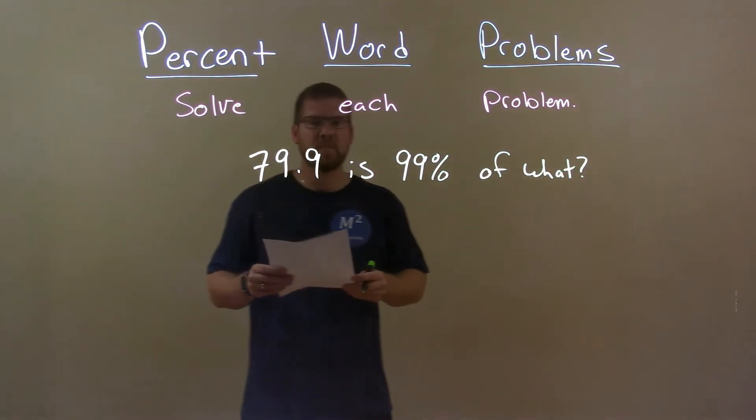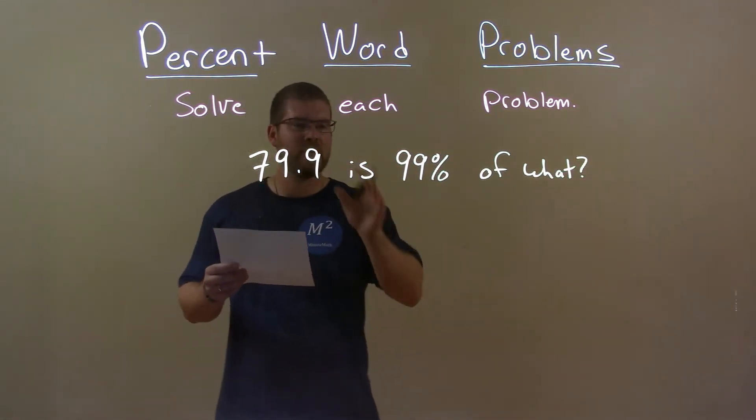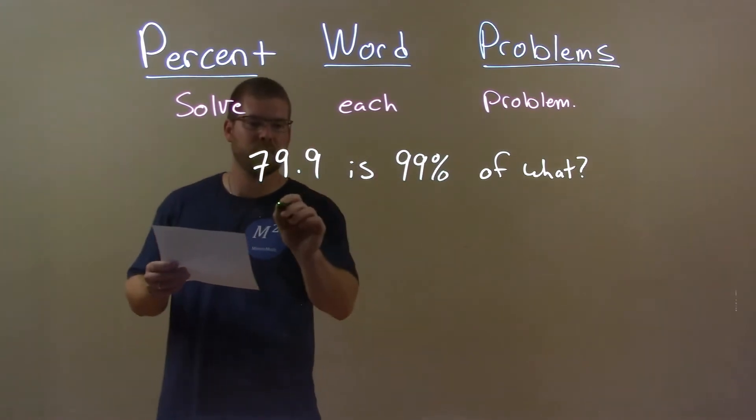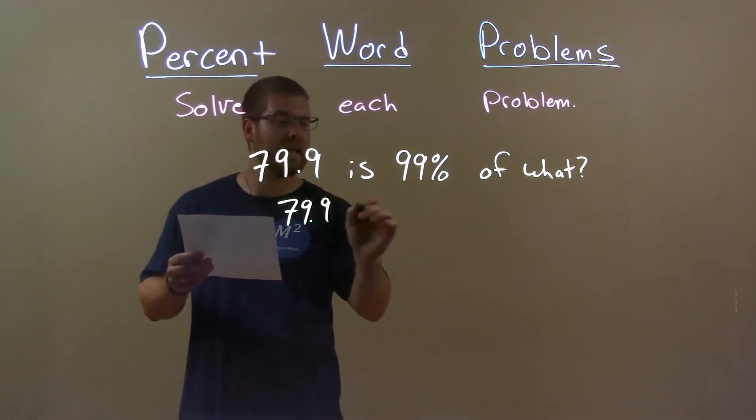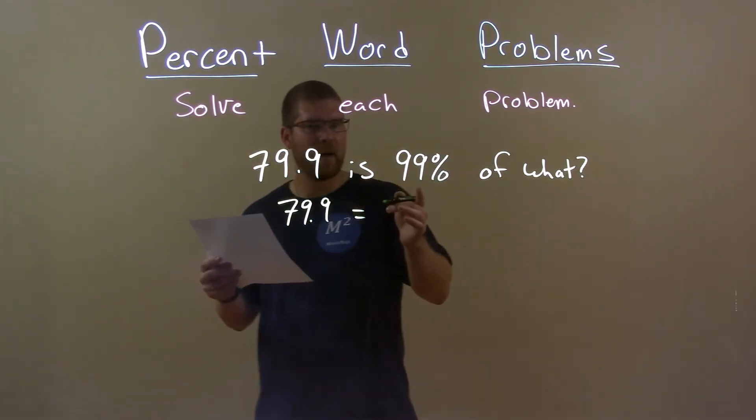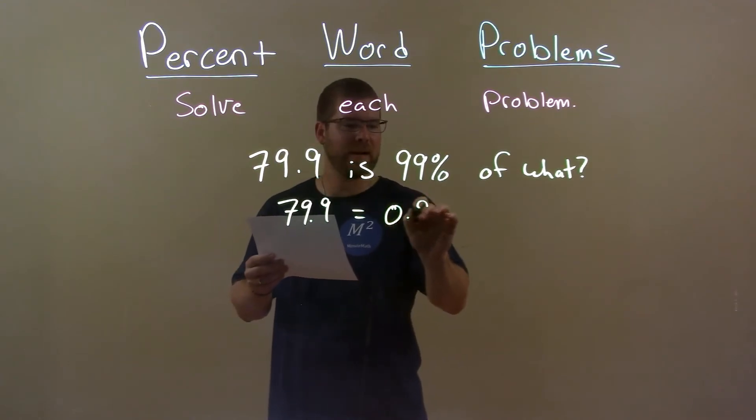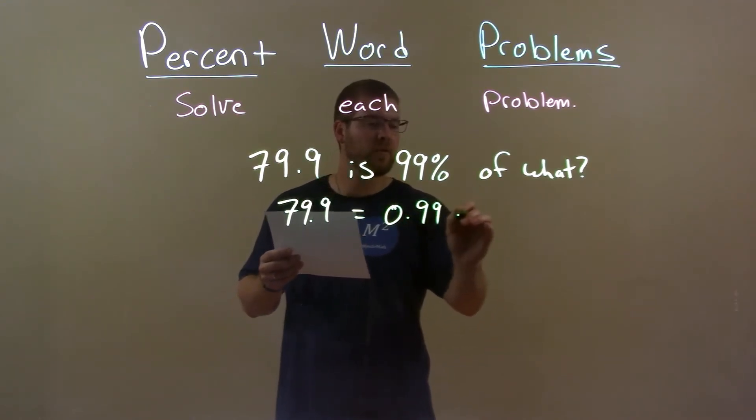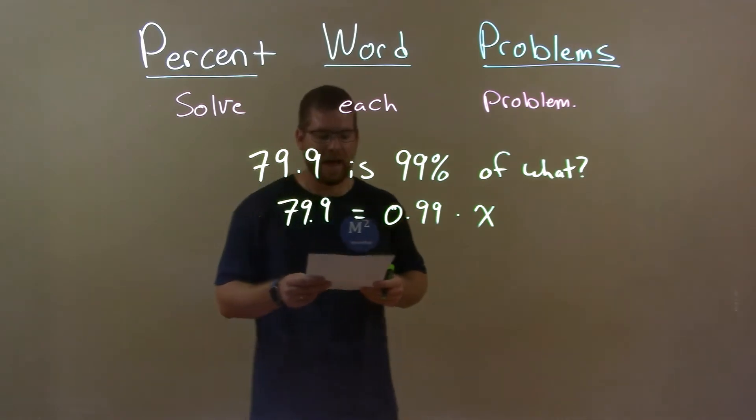So, first thing here is I want to convert this to an equation. 79.9, is, equal sign. 99% as a decimal, 0.99, of means multiply, what? Our variable x here.